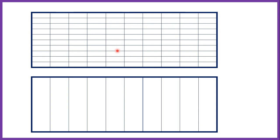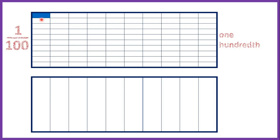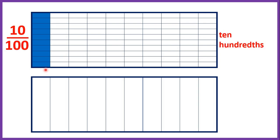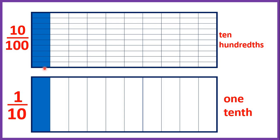Here we've got two different fraction bars. The top fraction bar is split into one hundred pieces so shows us hundredths, and the fraction bar below is split into ten pieces so shows us tenths. One hundredth is one part out of a hundred. We can count on — two hundredths, three hundredths — all the way to nine hundredths. Then if we've got ten hundredths we can see that's the same as having one tenth; we've got the same amount shaded in both rectangles. So ten hundredths and one tenth are equivalent fractions.